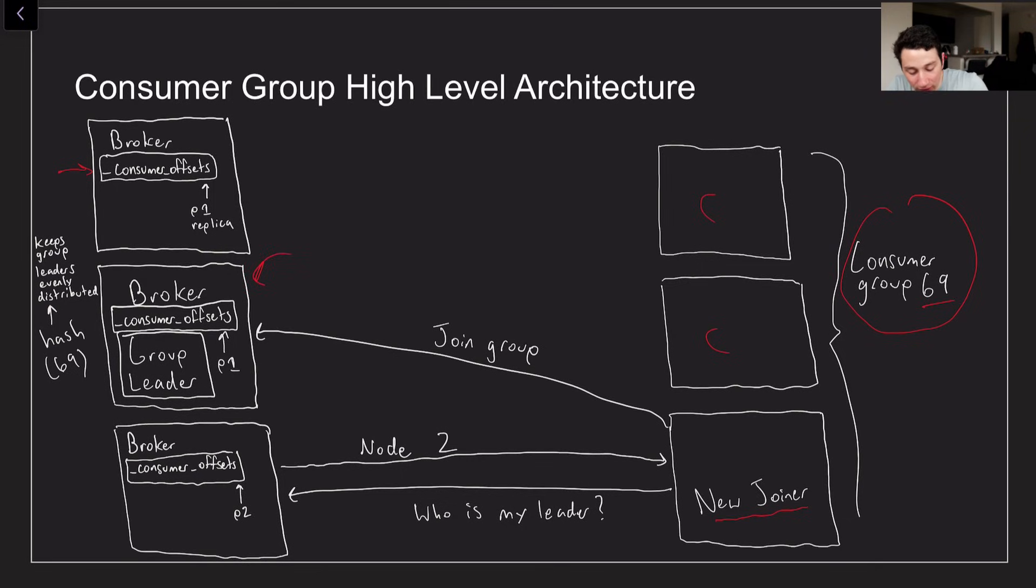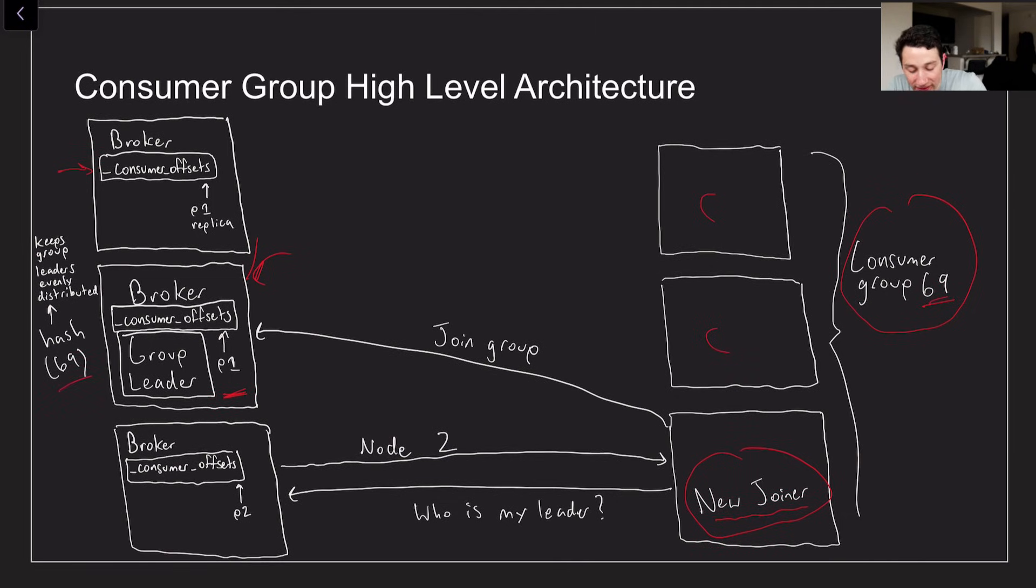So let's say that this particular broker is the leader for the partition of the consumer offsets topic that this new joiner is interested in, because it's consuming from basically some topic on a broker that corresponds to that part of the offsets queue. So basically in this case what I would do is say, let's say the group ID is 69, I take the hash of it. What this is going to tell us is okay based on the hash of my group ID I know which broker is going to basically be hosting or considered the group coordinator for my consumer group because the hash of the group ID corresponds to this particular consumer offsets queue and then as a result all of the offsets for this particular consumer group are going into this particular topic right here and specifically that topic partition of it. So this is going to be the group leader.